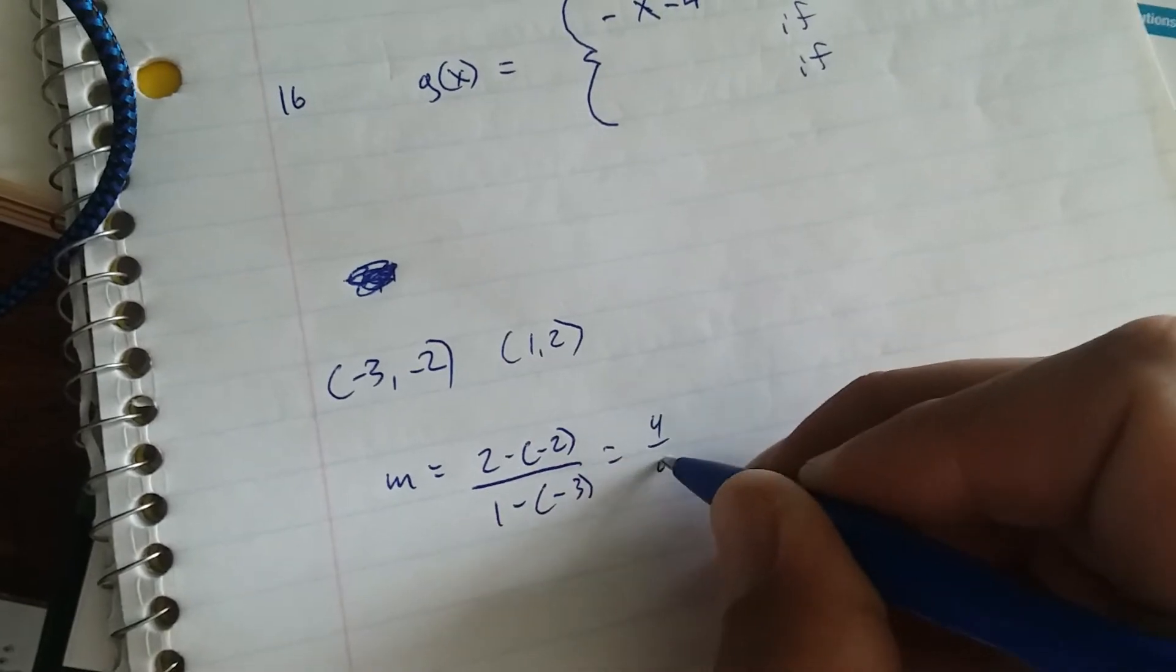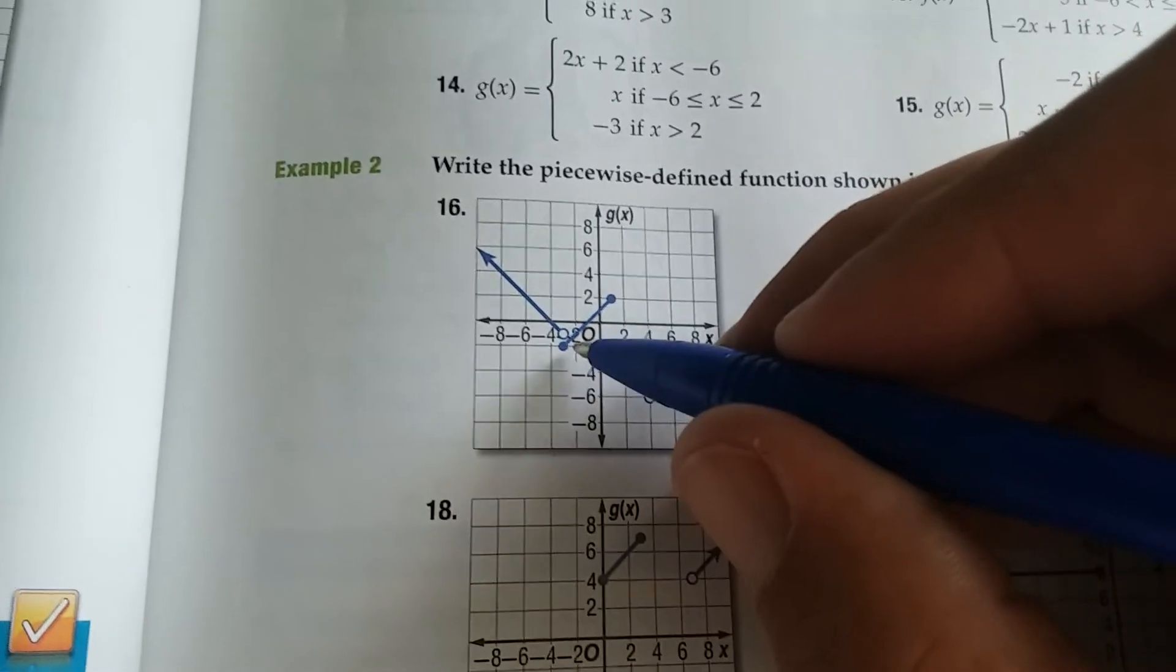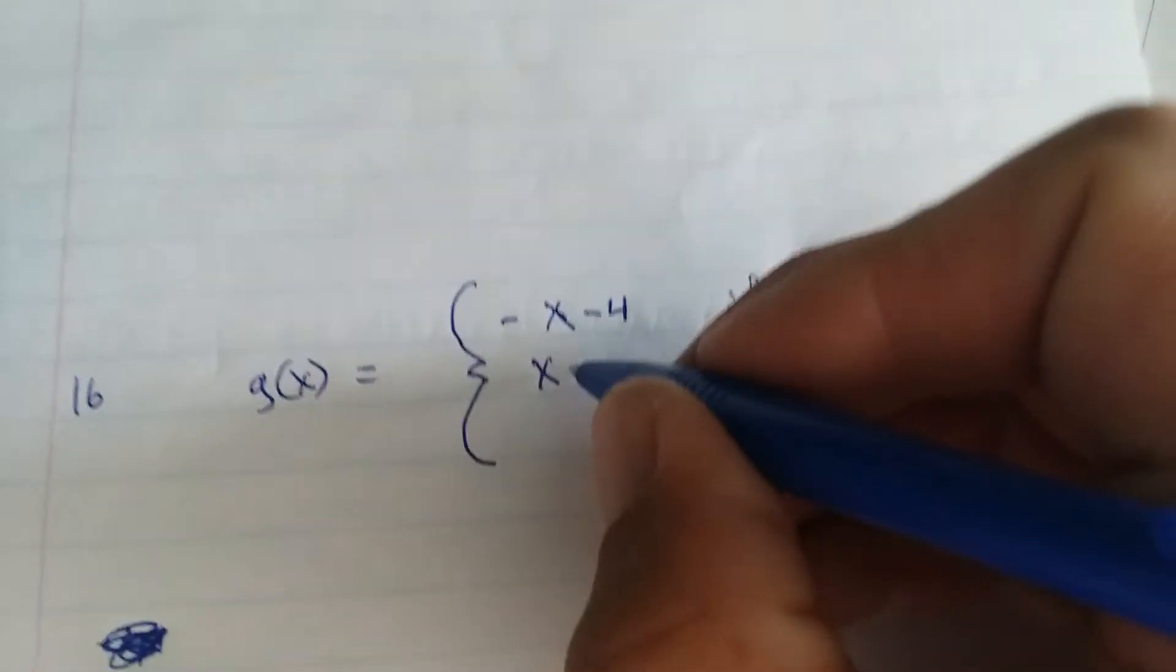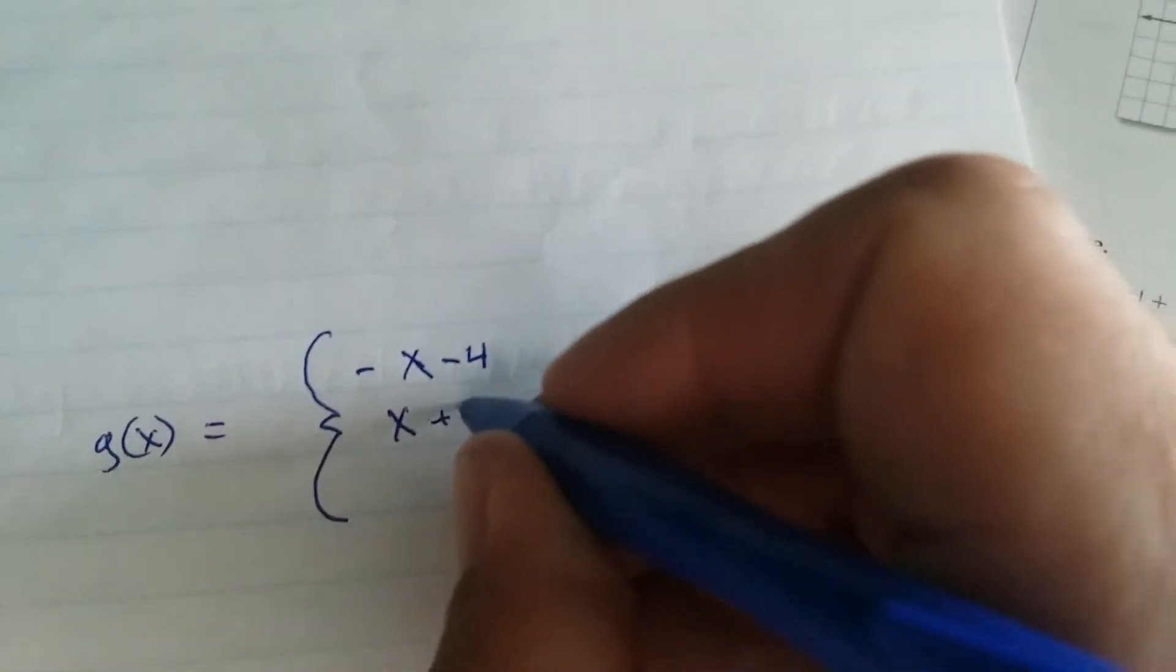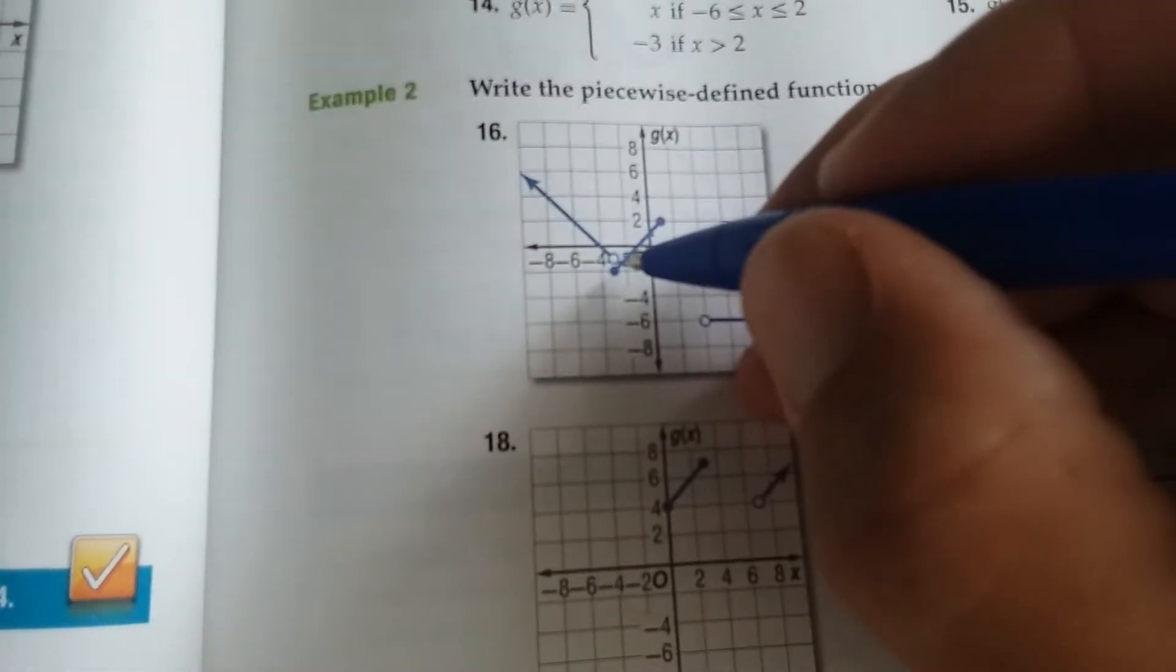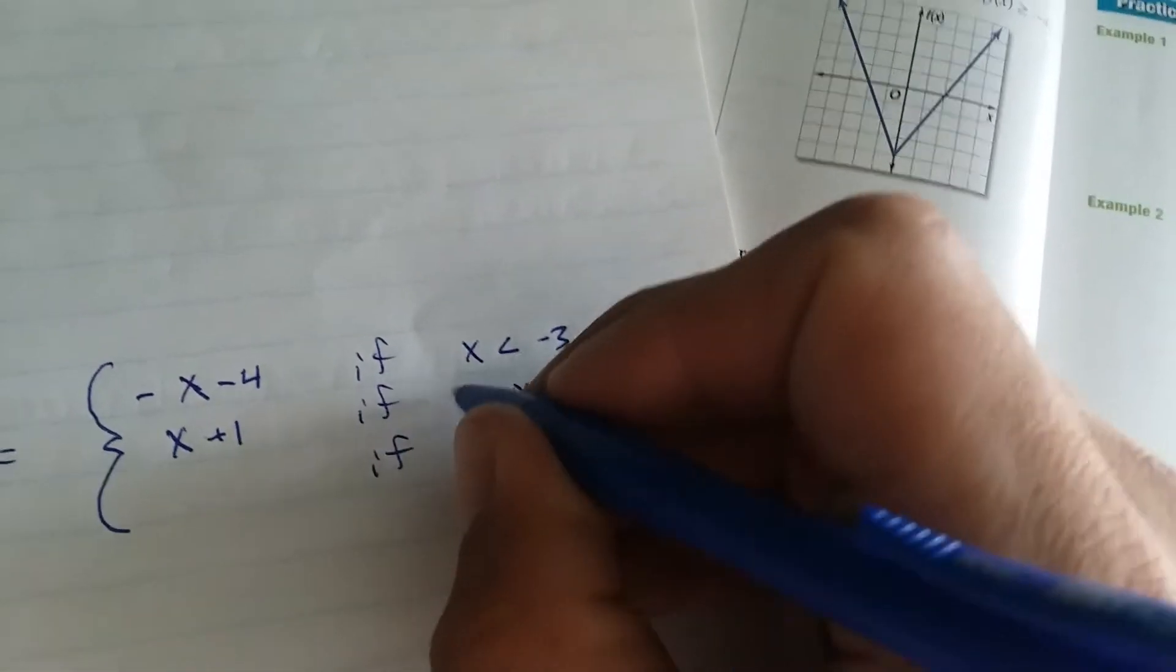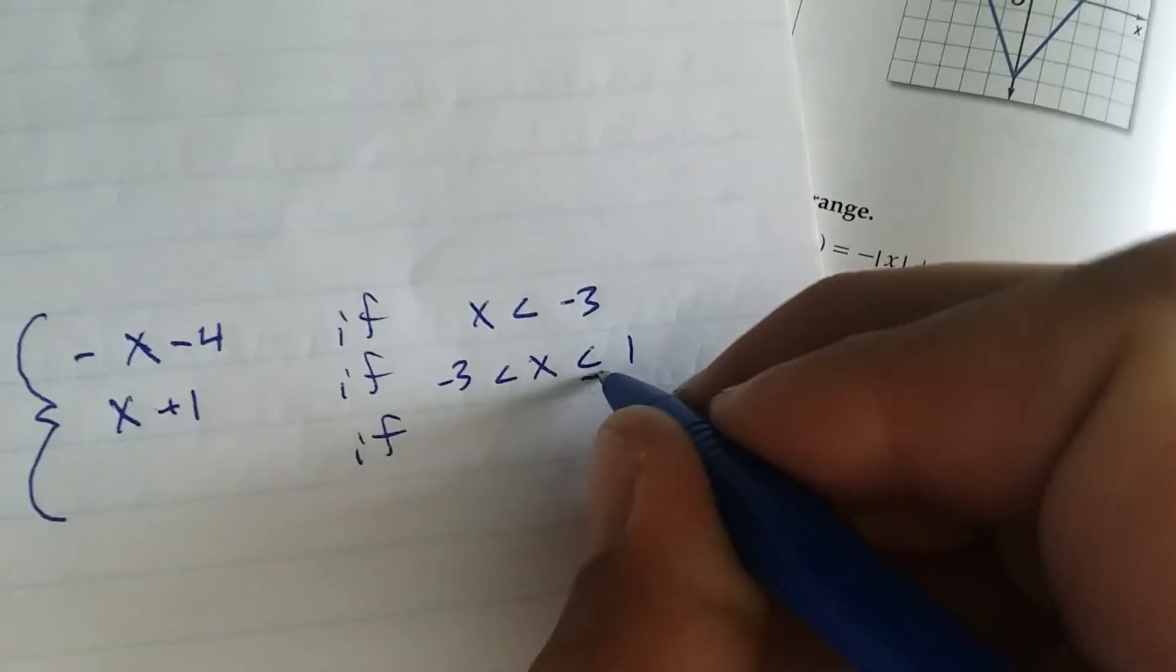So it's going to be x, you're going up 1 over 1 right here. And then your intercept is 4x, or I mean 1. Your intercept is 1 right here, x plus 1. If you are to the right of negative 3 and left of 1, so if x is to the right of negative 3 but then less than 1, put an equal bar under there.